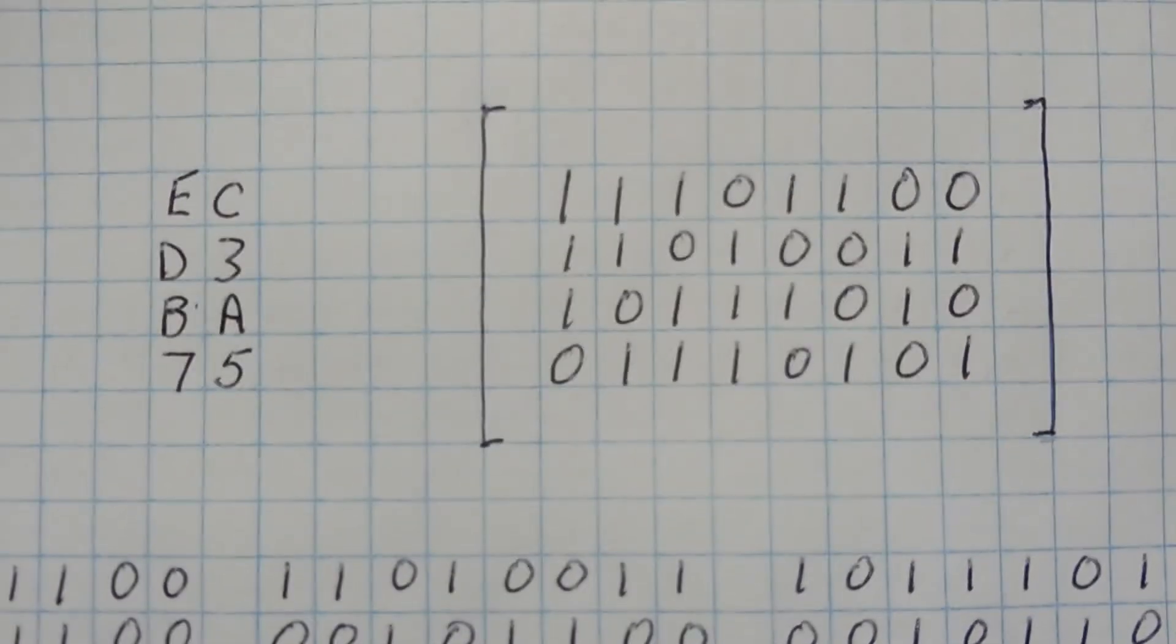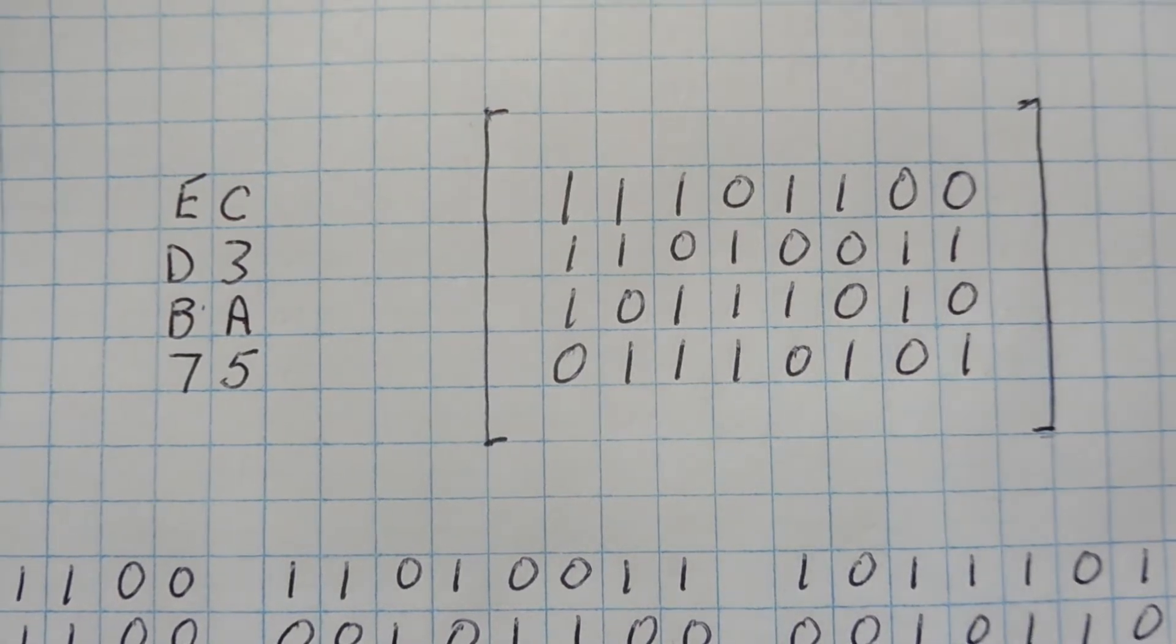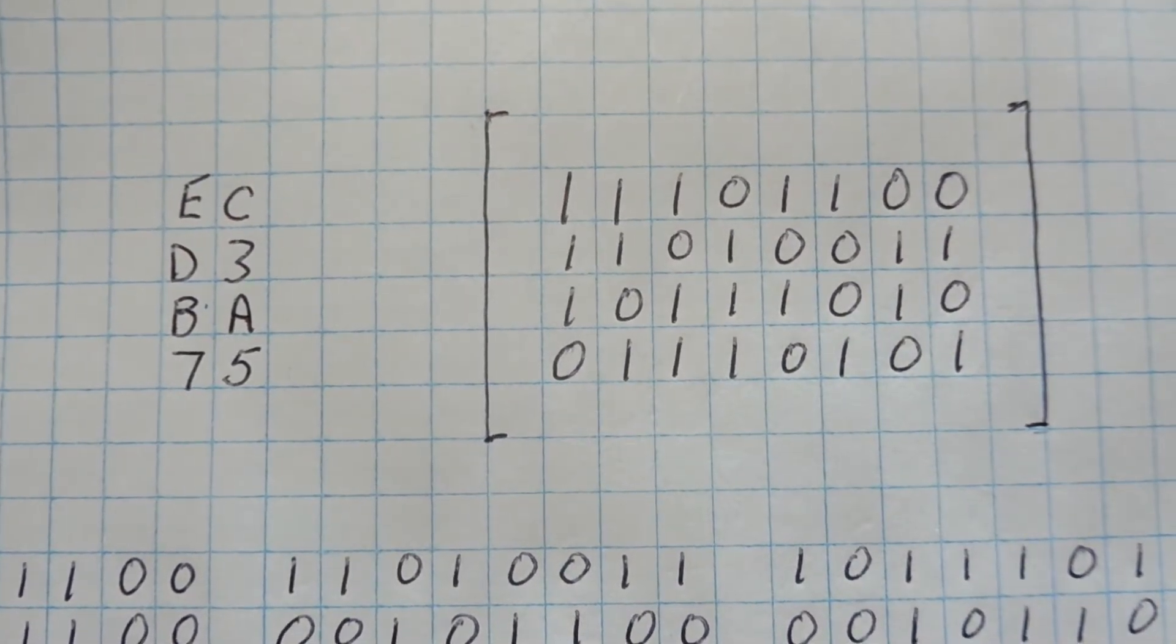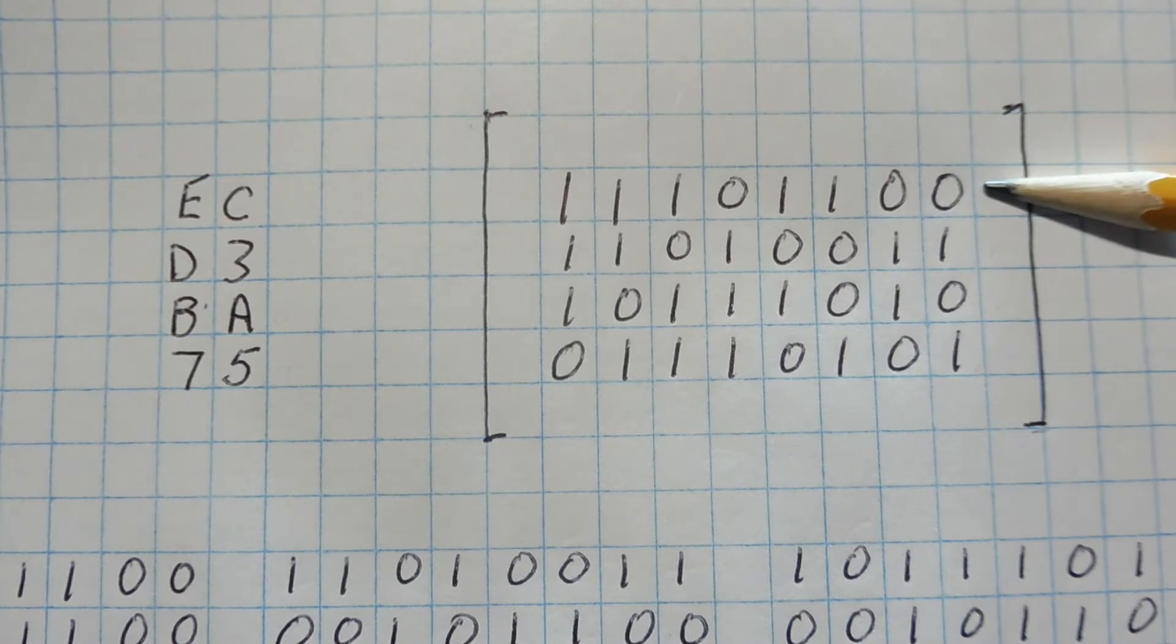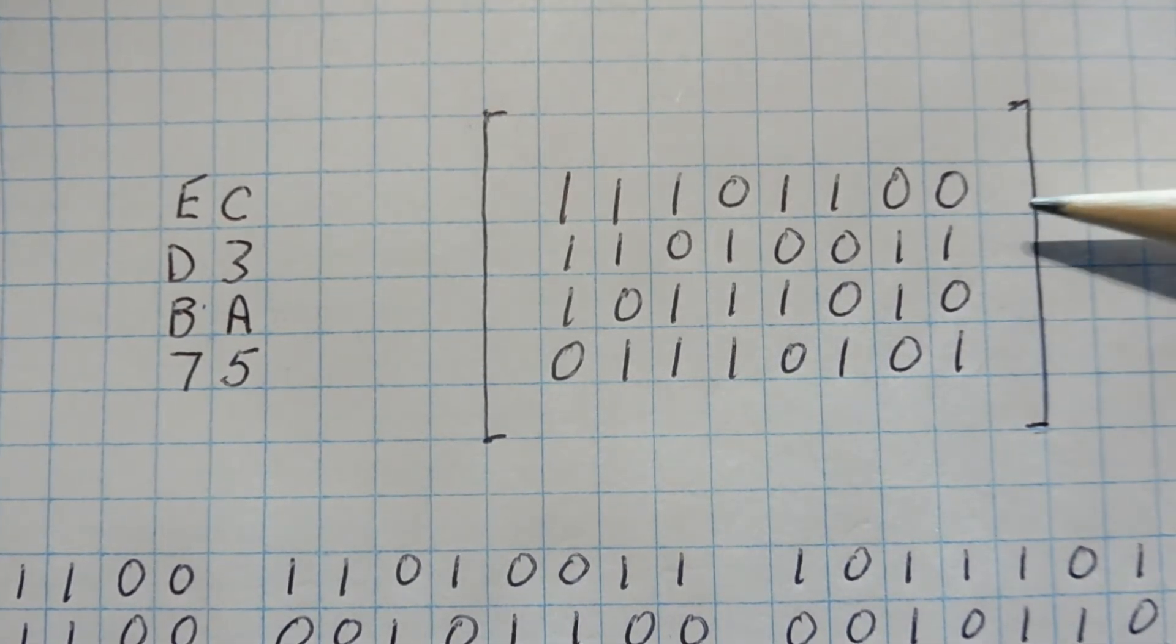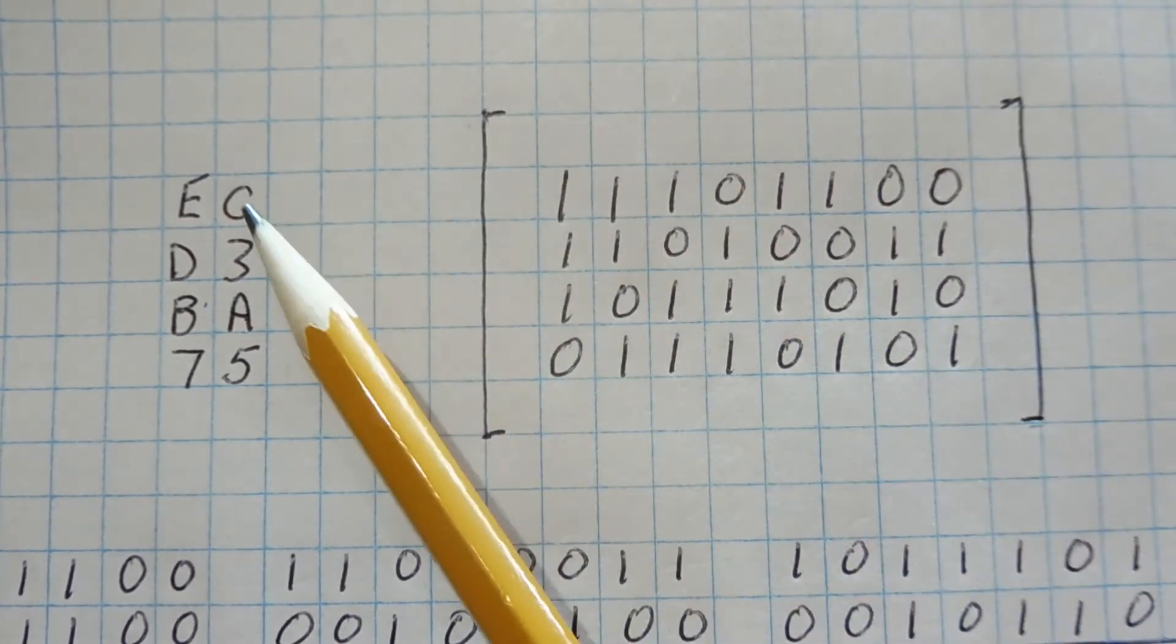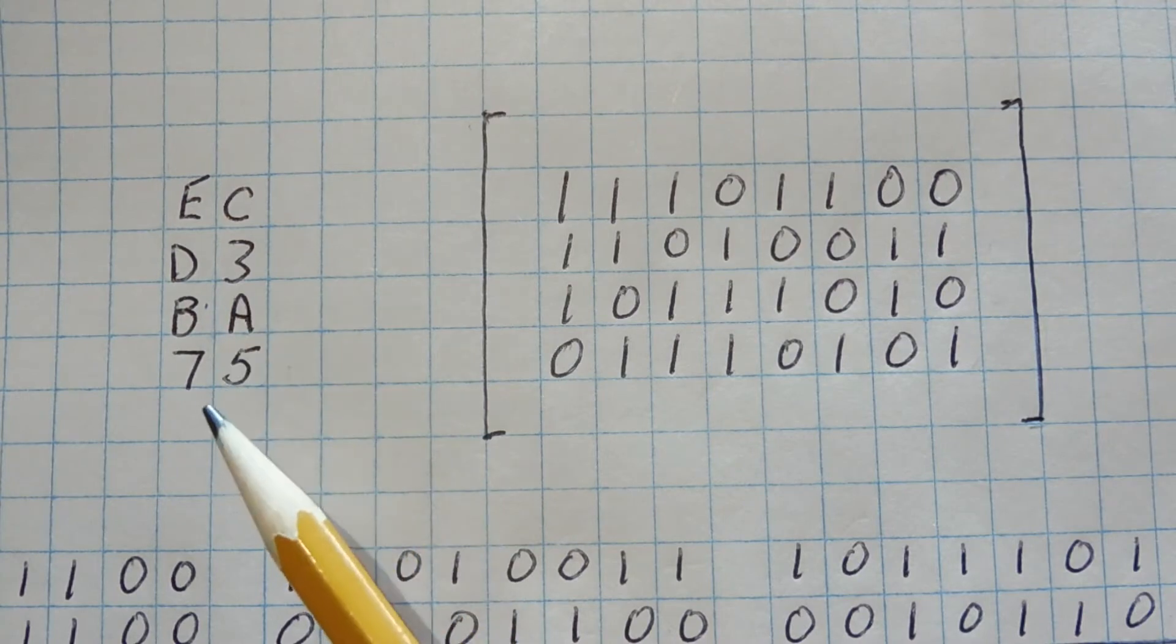Okay, here's the Hamming code matrix that we're going to use in our FEC calculations. Now there's four bytes in the Hamming code matrix. So there's our first one, second one, third, and fourth. And I've written them out in binary, so it's a little bit easier to understand what's going on. But in hex, the hex values are EC, D3, BA, and 7-5.